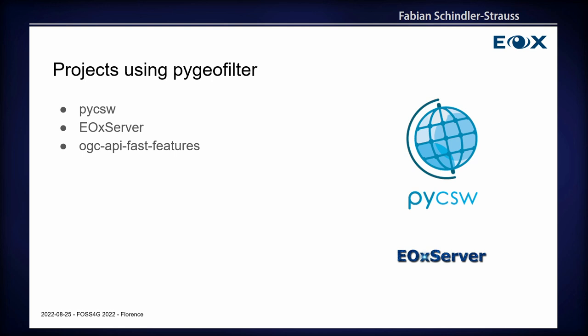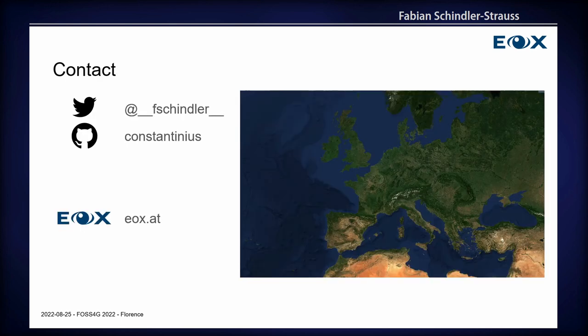Finally, some projects that are using PyGeoFilter already. PyCSW, which we have already heard about. Also our own geospatial data service called UX service is using it. And in the sphere of the planetary computer by Microsoft, there's also a project called OGC API Fast Features which is using it. I hear some rumors that it's going to be used in even more projects, so I'm really proud. This whole project is now just about two years old, so it's rather new. If you find it interesting, please write issues, contribute, discussions, pull requests — everything is welcome. Thank you for your attendance and your attention, and questions are welcome.